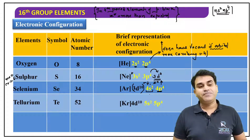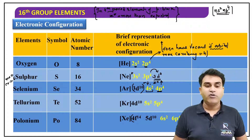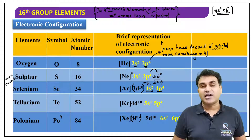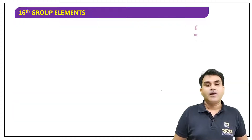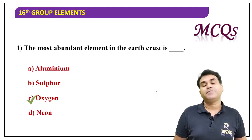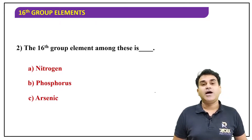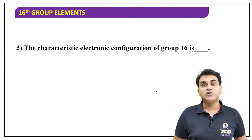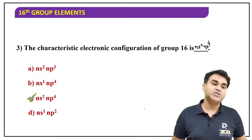Tellurium: [Kr] 4d¹⁰ 5s² 5p⁴, and polonium: [Xe] 4f¹⁴ 5d¹⁰ 6s² 6p⁴. Polonium's configuration and characteristics are not very important for us since it is a radioactive element. So the general electronic configuration of the 16th group is ns²np⁴. Oxygen is number 1 in abundance, silicon is number 2. Polonium is the 16th group element among the given options — nitrogen, phosphorus, arsenic are all 15th group. The characteristic electronic configuration of the 16th group is ns² np⁴.